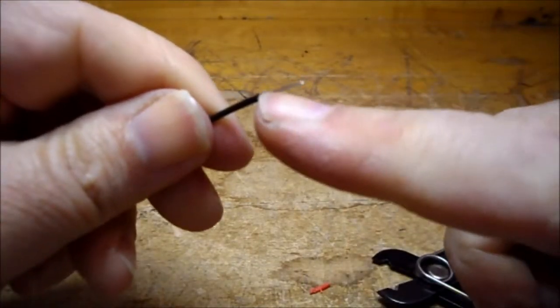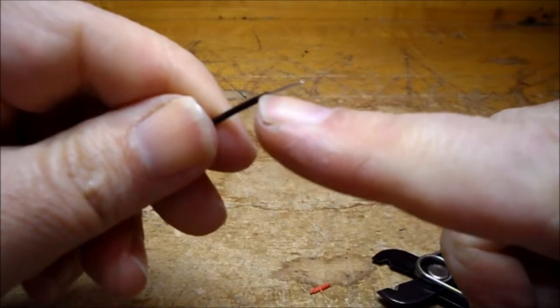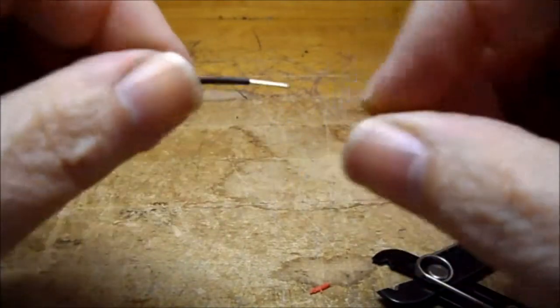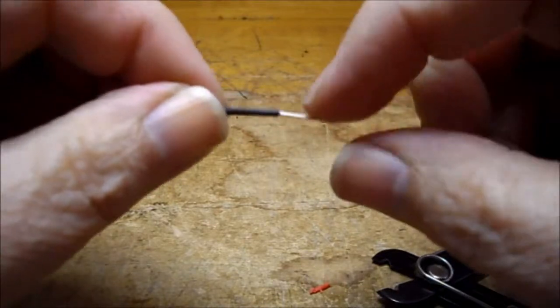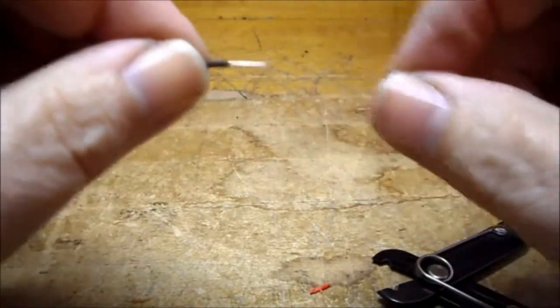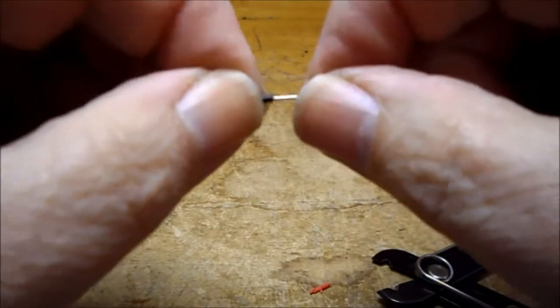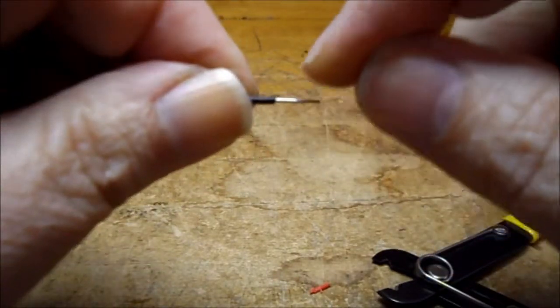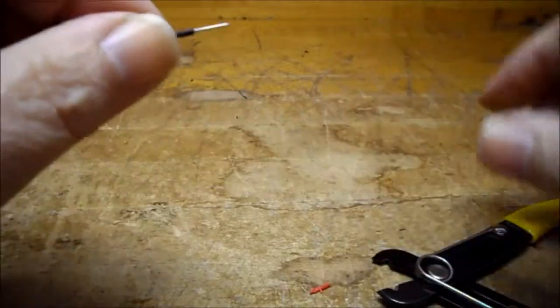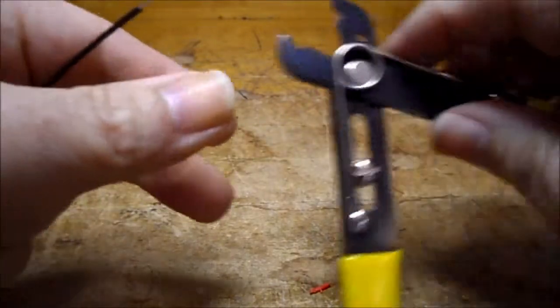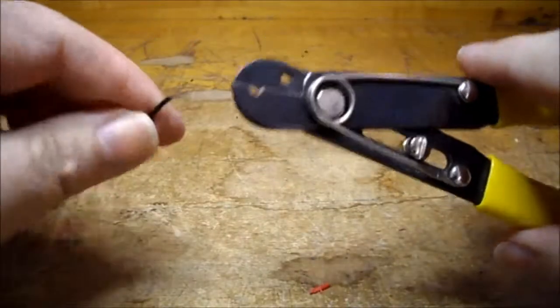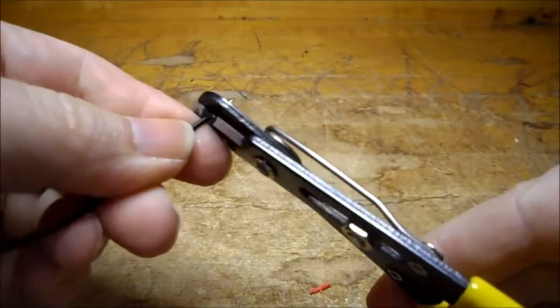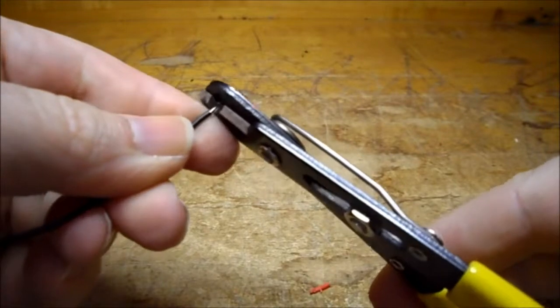If you nick the wire, what's going to happen is it's going to cause a weak point there. As you bend these wires back and forth, where is it going to break? At the weak point. So it's very important that when you adjust these wire strippers, you adjust it so that the wire when it fits in there can slide back and forth fairly easily.